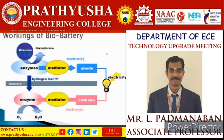In the construction of this biobattery, there is a separator. Above the separator there are enzymes and glucose, and below there is a mediator. The separator separates the glucose and the mediator. The electron movement goes from anode to cathode. Through this complete cycle, the electrons start flowing, constructing a current which can be extracted to the load.